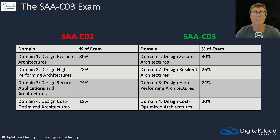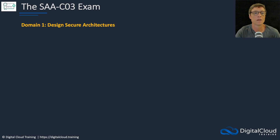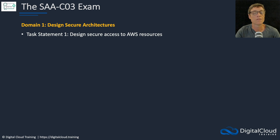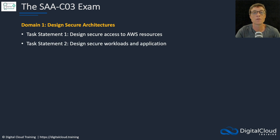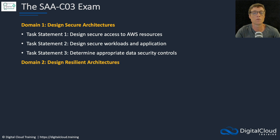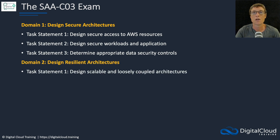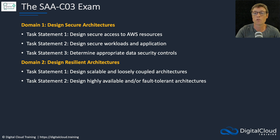It makes sense that they are almost identical because it's still the Solutions Architect Associate exam, still meant for people who are performing a solutions architect role. But over time things do change a little bit — AWS is constantly evolving and releasing new services and features. So with the exam update they release a new pool of questions that test you on a few new knowledge areas. In domain one for Secure Architectures, you need to know how to design secure access to AWS resources, design secure workloads and applications, and determine appropriate data security controls.